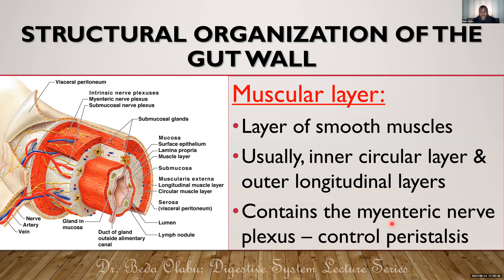The nerve plexus within this muscular layer is known as the myenteric plexus of nerves, or the Auerbach's plexus of nerves. This is also part of the enteric nervous system, and in particular the nerve plexus within this zone controls peristalsis — the contractions of the GIT wall.